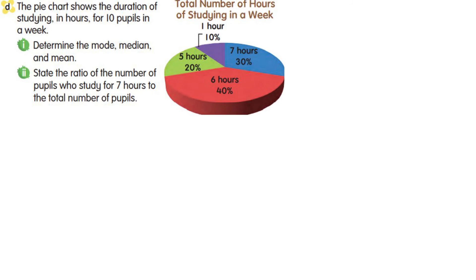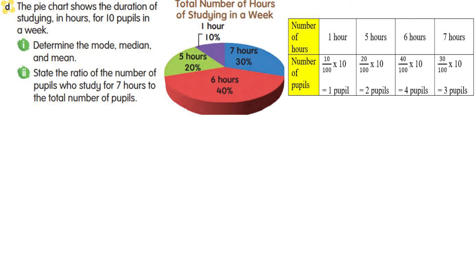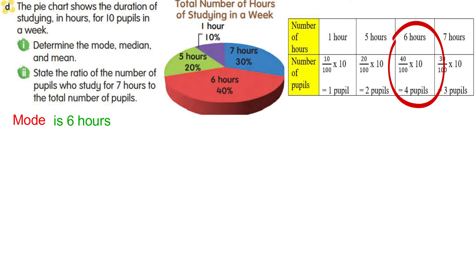Now look at example D. The pie chart shows the duration of studying in hours for 10 pupils in a week. Determine the mode, median, and mean. First, find the number of pupils for each hour: 1 hour is 1 pupil, 5 hours will be 2 pupils, 6 hours will be 4 pupils, and 7 hours will be 3 pupils. From the data, we can say that the mode is 6 hours, which has the highest frequency.